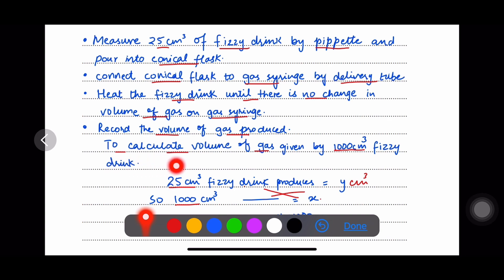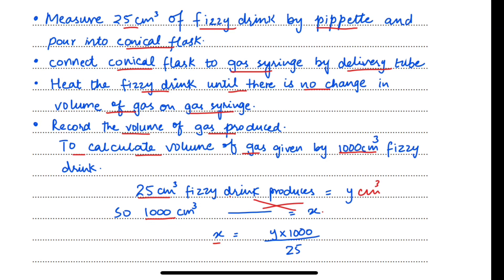Now conversion. To calculate the volume of gas given by 1000 cubic centimetres or 1 cubic decimetre of fizzy drink, you will do the calculations.